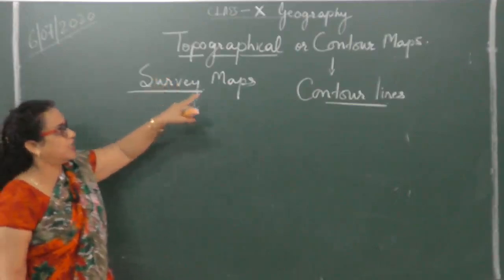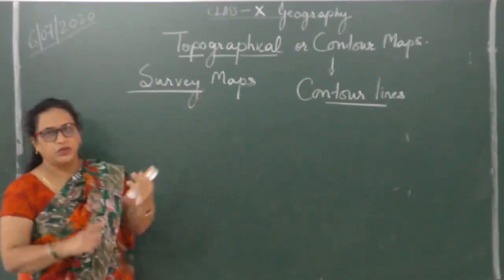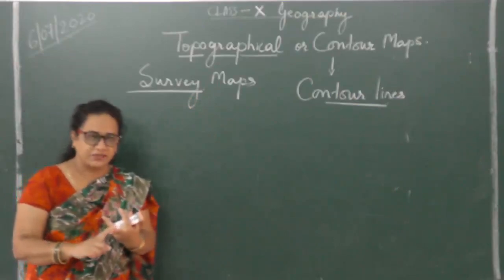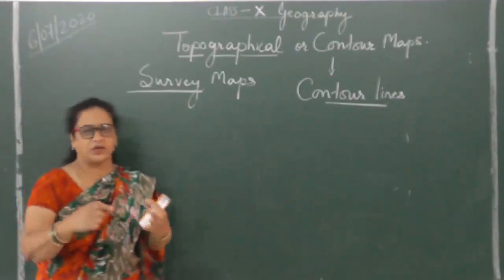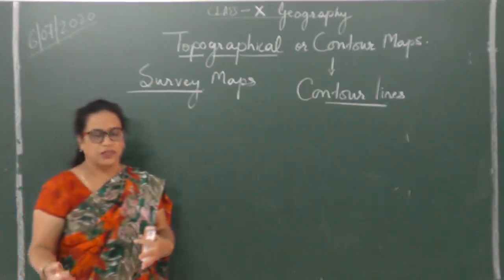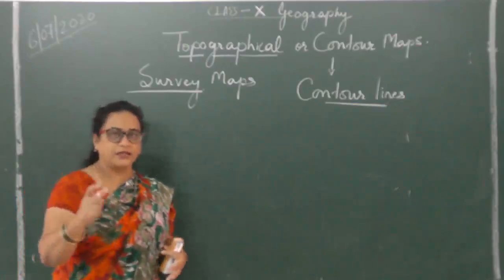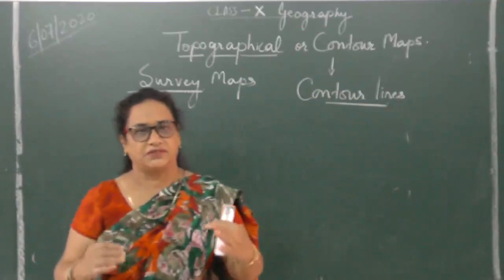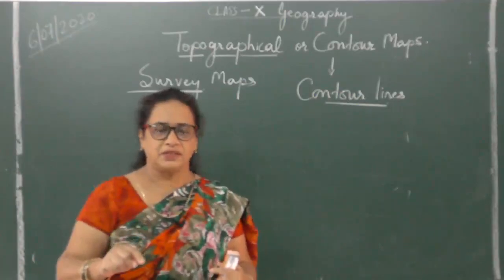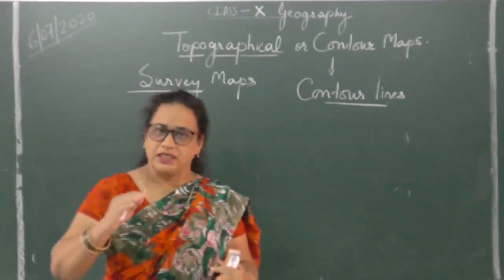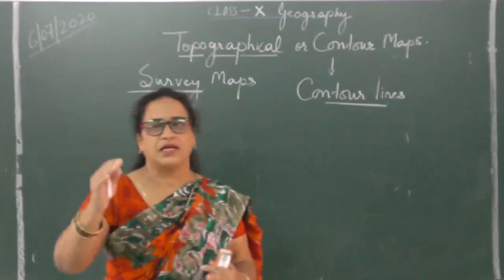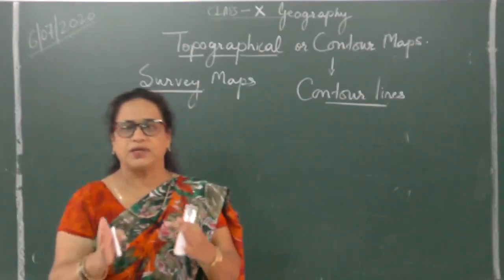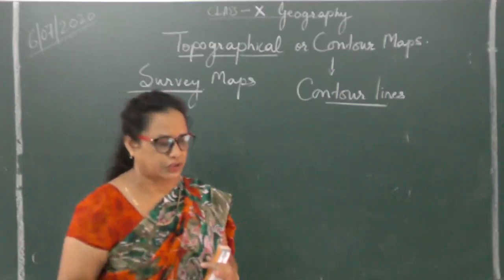So all three names you should be familiar with: topographical, contour, and survey sheets — we call them sheets or maps. In the board exam, every student gets a separate survey sheet — the same map printed in large numbers and given to each student so that each one has his own map to solve questions on.